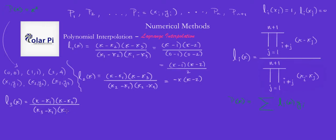L3 is going to be X minus 0 times X minus 1. And so I could just write that as X times X minus 1.